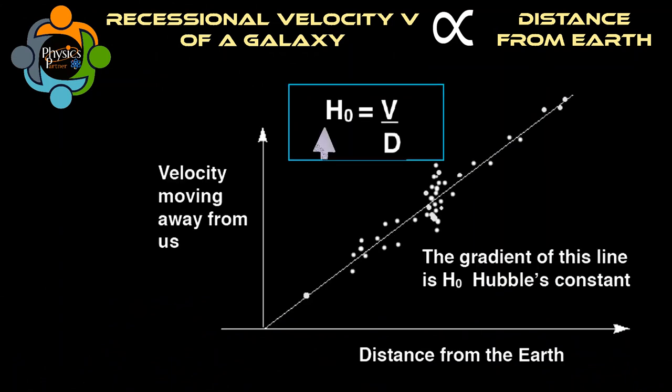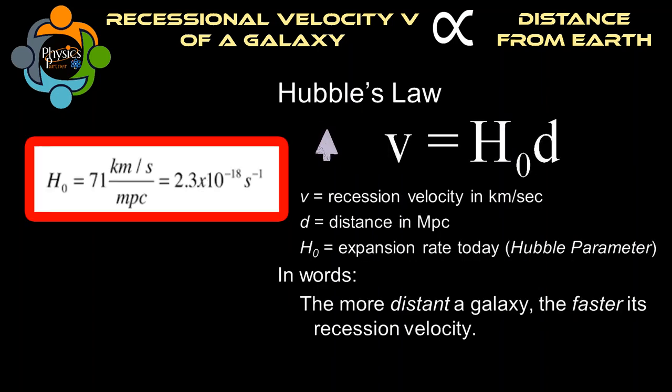We can express this in this equation where H₀ is equal to v divided by d. You can see on the screen, this H₀ is actually the Hubble constant. Don't worry, students, in the exam the value of H₀ will be provided. The accepted value of H₀ is 2.2 × 10⁻¹⁸ per second. Here v is the recessional velocity of an object, meaning the velocity of an object moving away from an observer, and the unit is kilometers per second. This d is actually the distance between the object and the Earth, and the unit is kilometers.